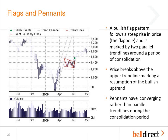Flags and pennants are another very well-used technical event by technical traders. A flag is formed when we have a very steep run-up in the price of a stock followed by a horizontal consolidation period. That steep run-up is called the flagpole, and the consolidation period is called the flag pattern. The flag is typically formed by horizontal lines of support and resistance that may slightly converge. If they converge a lot, it actually becomes a pennant. Often the flag indicates a consolidation period after which the price of the security will resume that very steep upward trend — and that's what actually happened in this particular case.